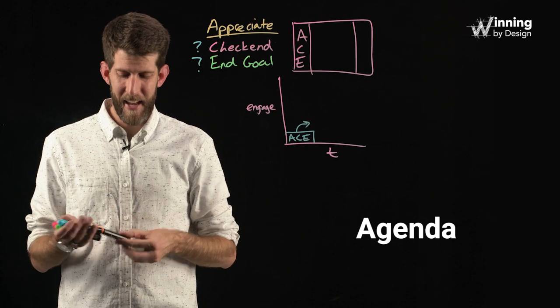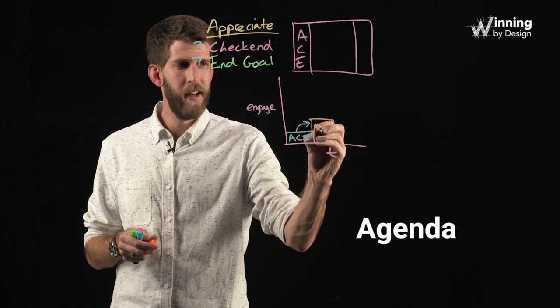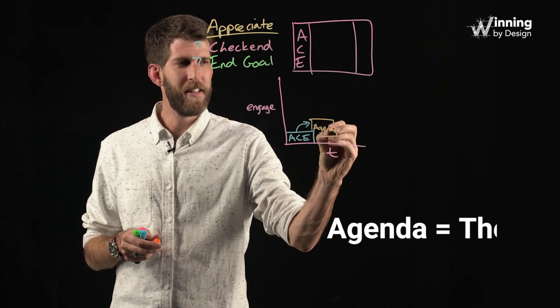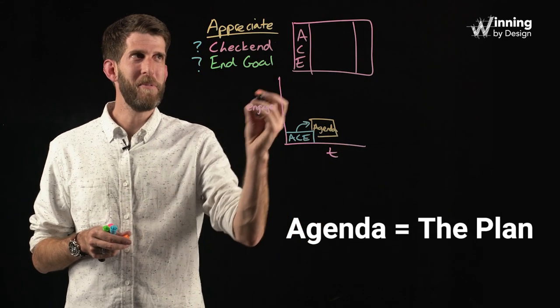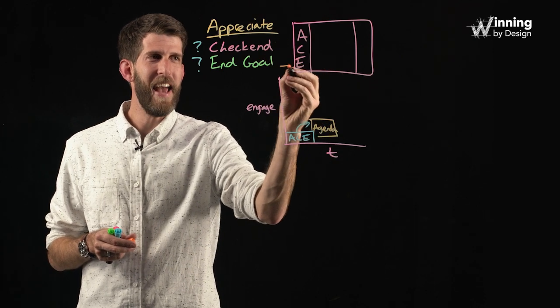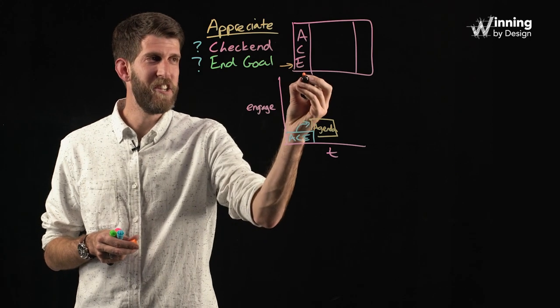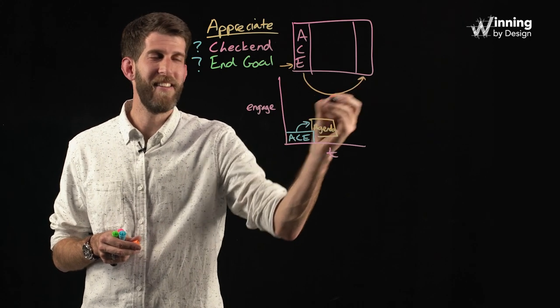And then that's going to lead naturally into this next step, which is the agenda. Now every meeting needs to have a purpose, which is what the end goal is, but the agenda is the plan. Now I mentioned before that in this three-part meeting we're going to have a beginning, middle, and the end. The end goal is the thing that is unifying the whole meeting together. The agenda is how we're going to get to that end goal.